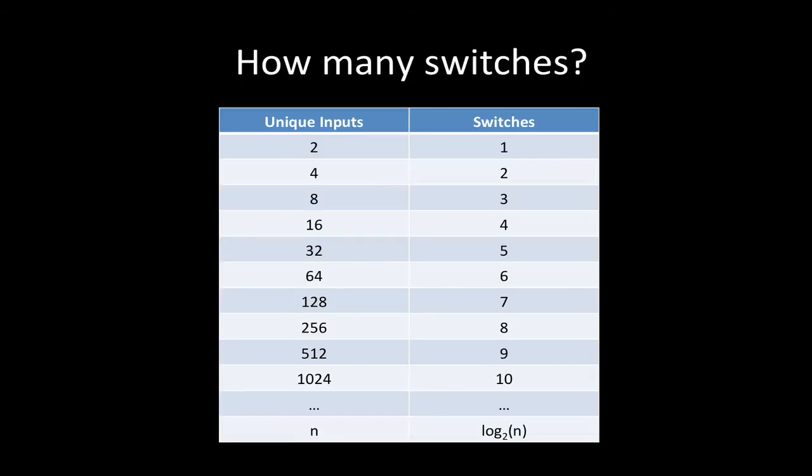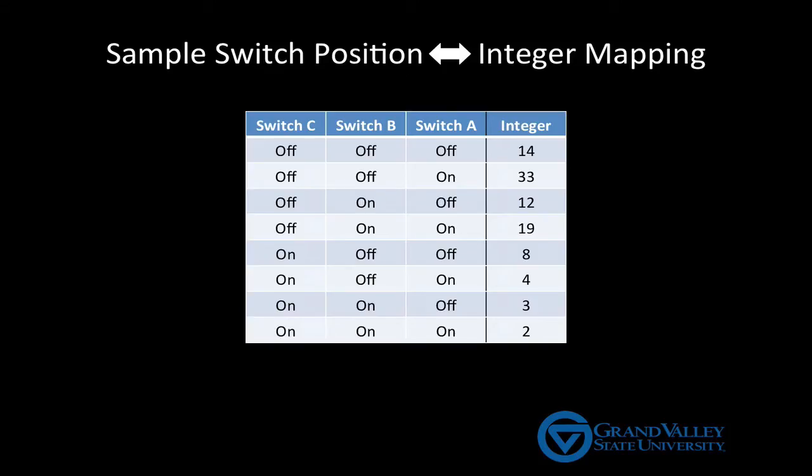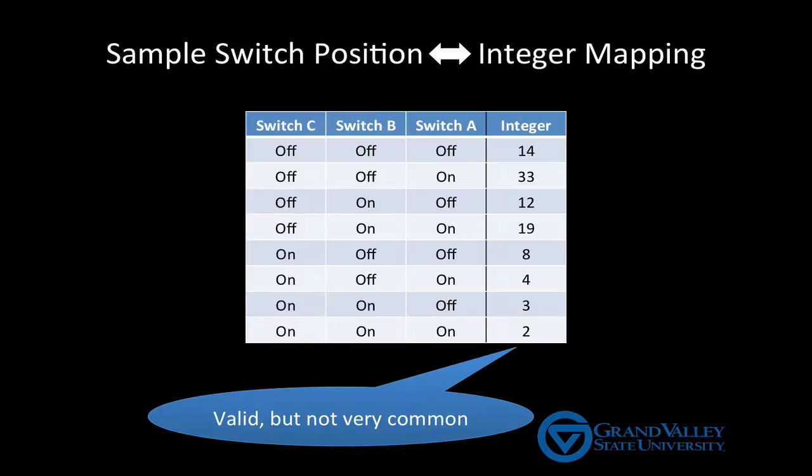In the first video, I mentioned that, in theory, we can assign integers to switch positions arbitrarily. Whomever designs the box gets to define what each sequence of switch positions means. For example, I could arbitrarily decide that when all three switches are off, I'm asking the box about the number 14. Similarly, I could decide that when the first two switches are off and the third one is on, I'm asking about 33, and so on. However, such arbitrary assignments are rarely used and rarely useful.